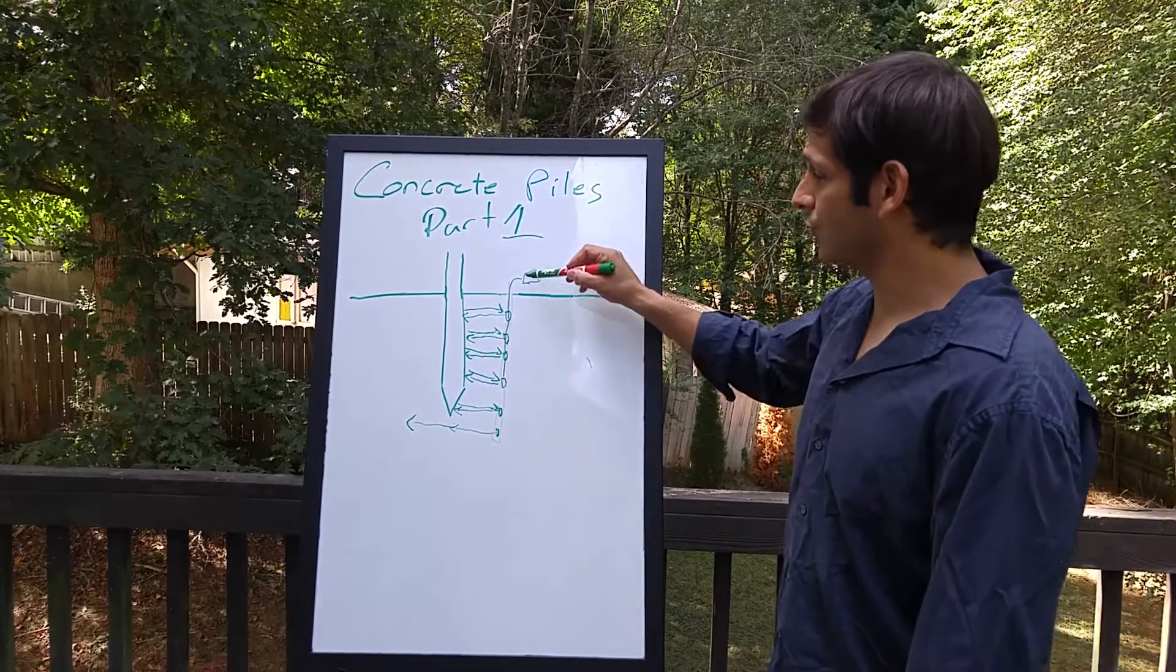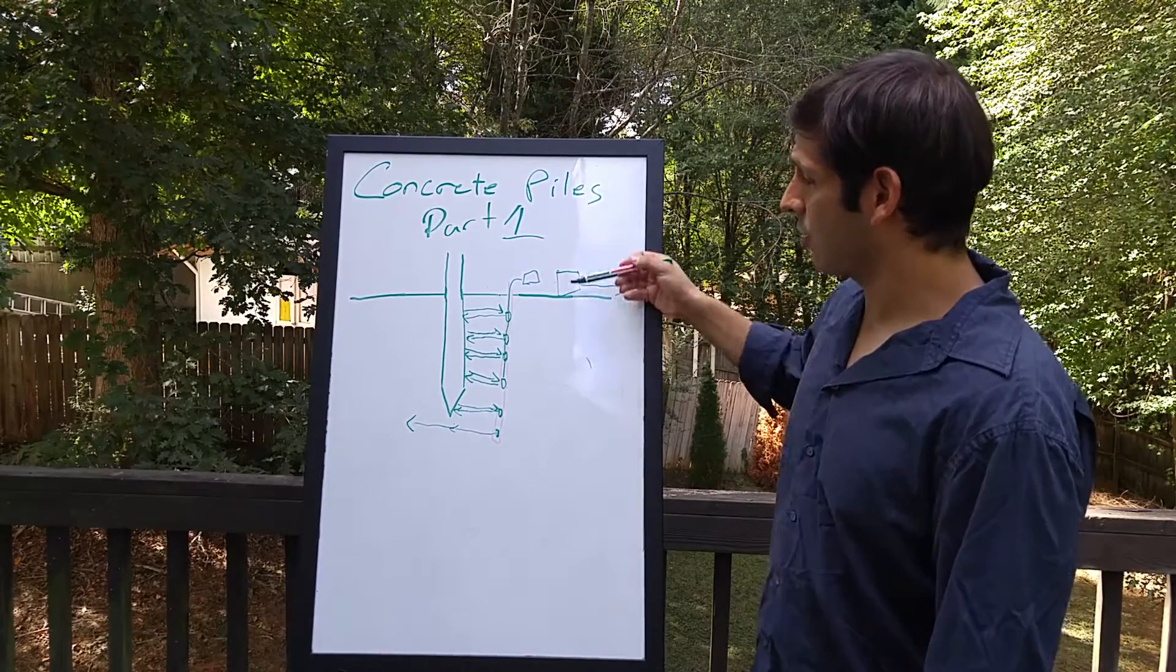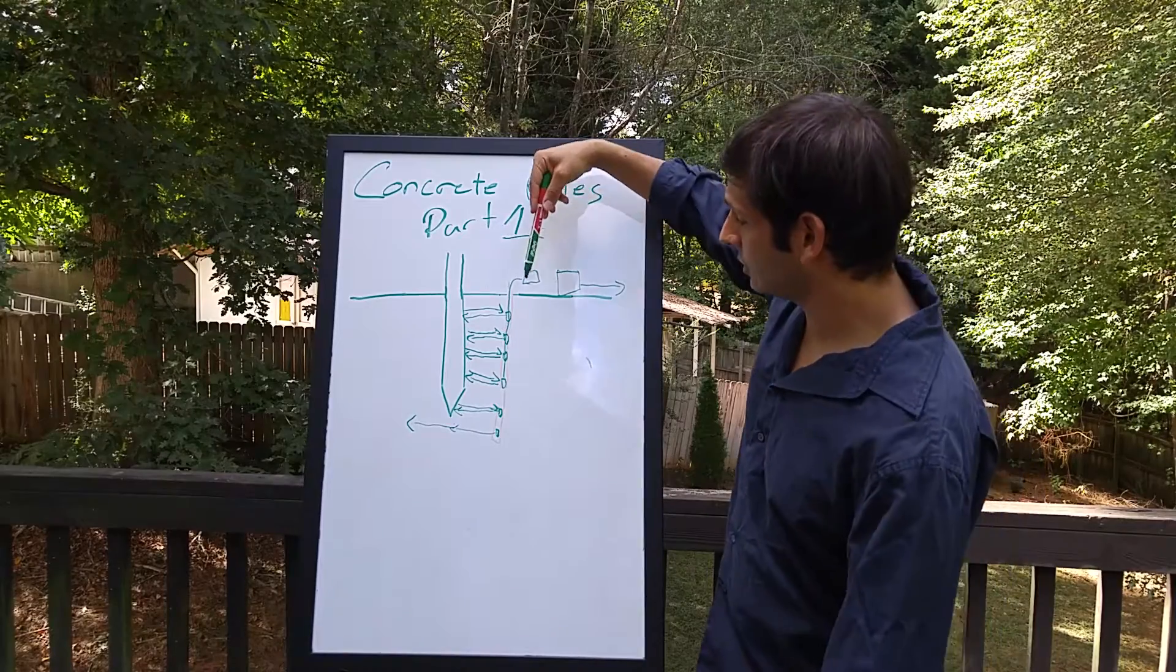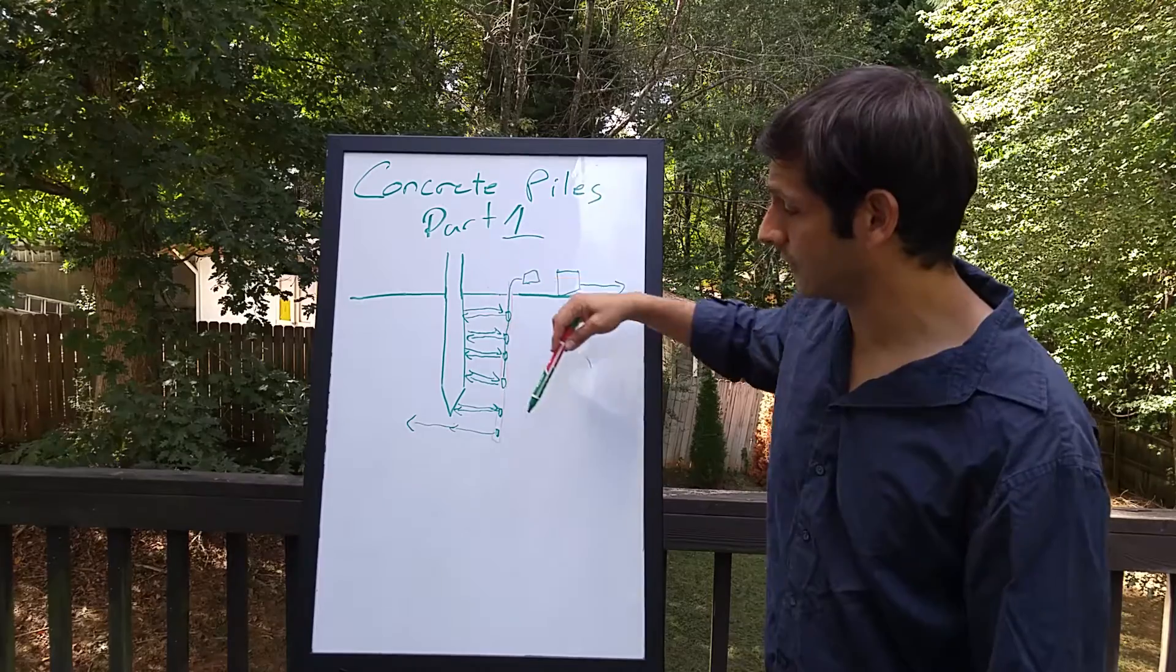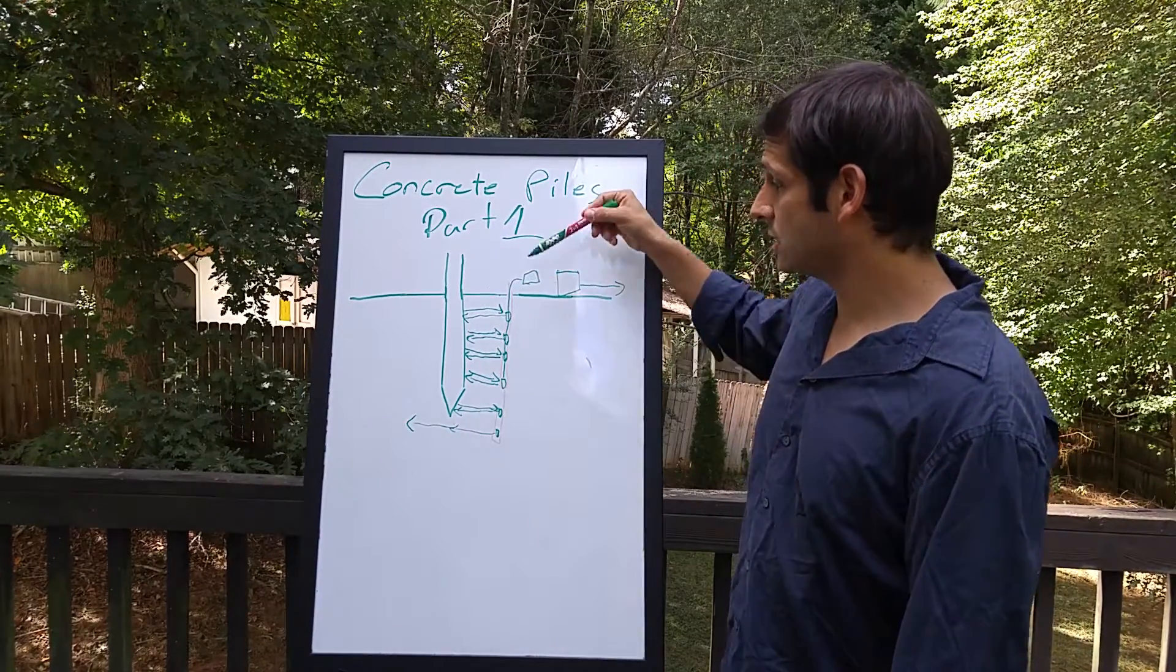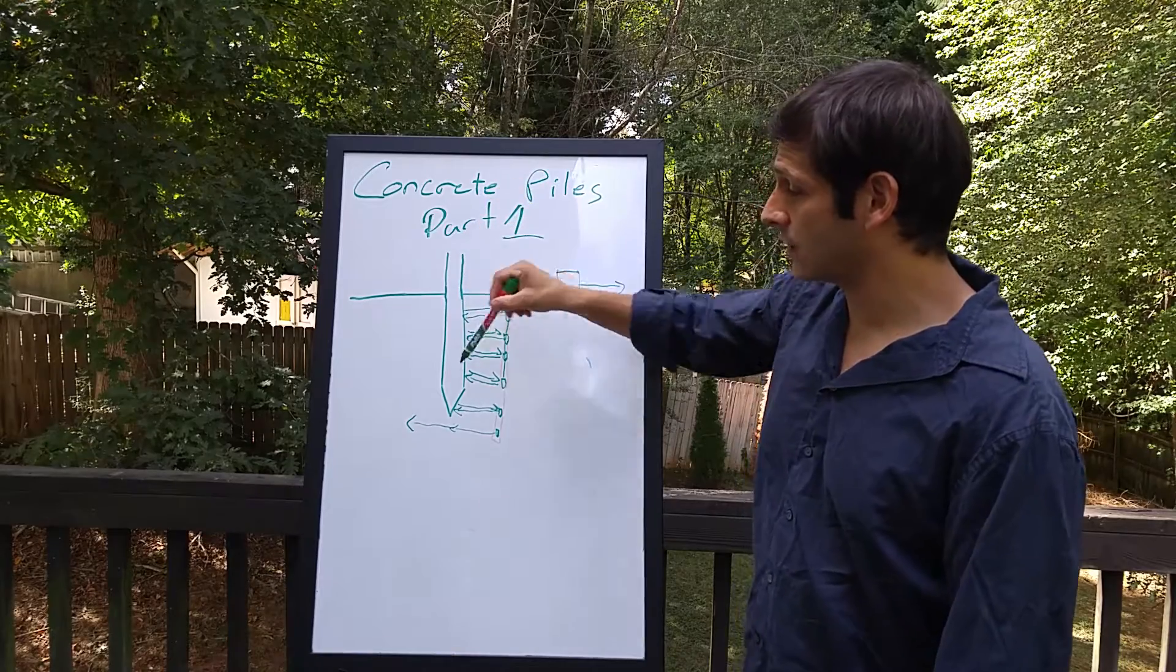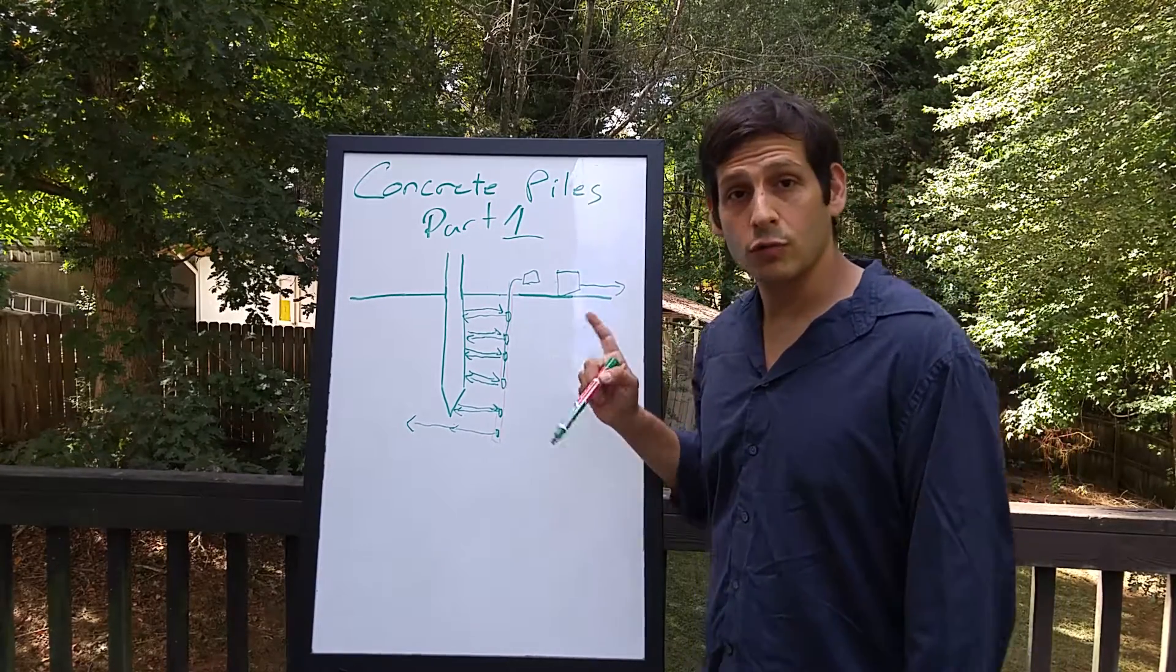And so in a sense, it turns ground penetrating radar, which typically goes along the surface this way, on its side somewhat, and actually does it by depth into the ground and looks at distance from the sensor to a reflection event that's somewhere else within the ground surface. So this is typically how the lengths of concrete piles are evaluated with borehole radar.